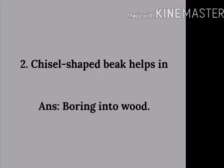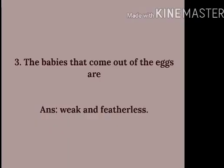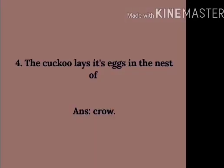Number 3: The babies that come out of the eggs are — Answer: Weak and featherless. Number 4: The cuckoo lays its eggs in the nest of — Answer: Crow.